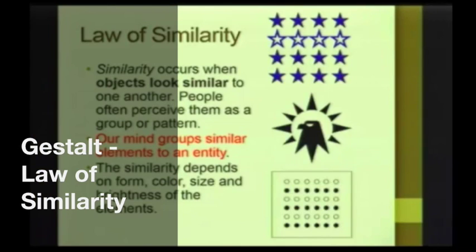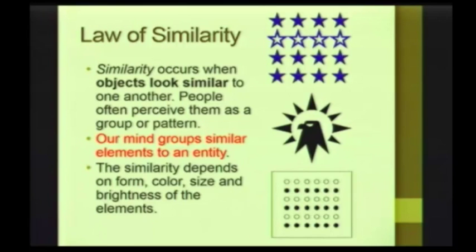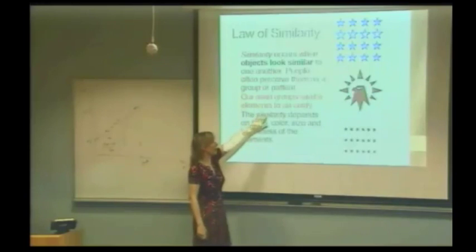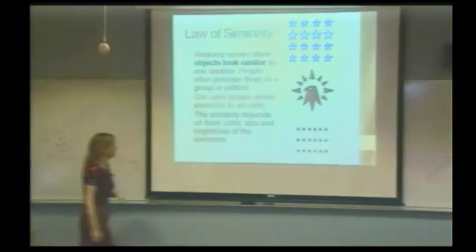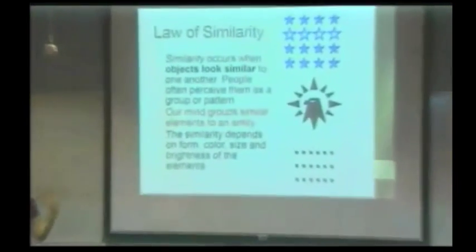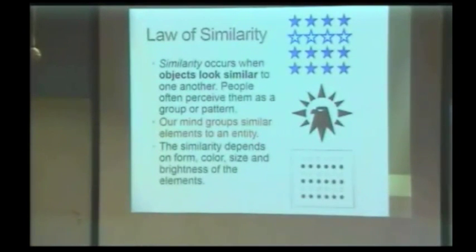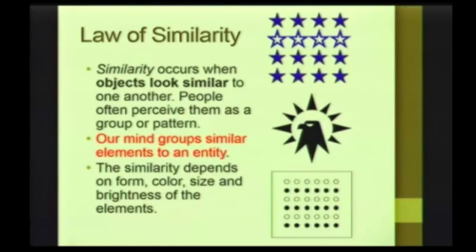Law of similarity. Similarity occurs when objects look similar to one another. People often perceive them as a group or a pattern. You want to remember that our mind groups similar elements to an entity. Now that similarity can depend on things such as form, color, size, brightness of the elements.